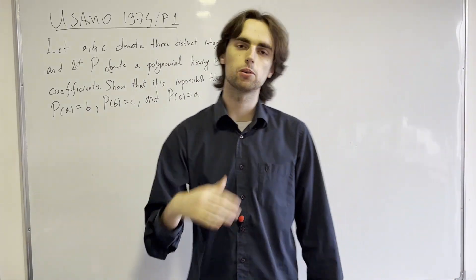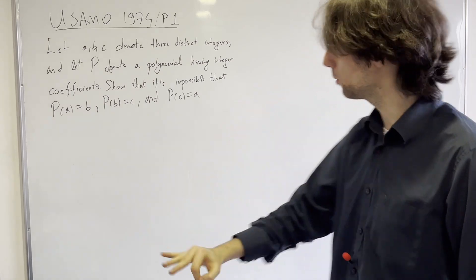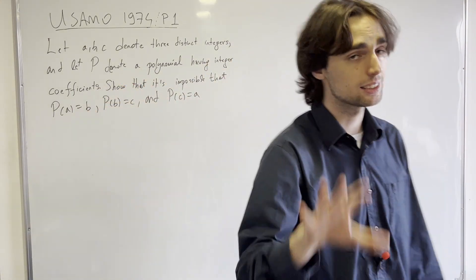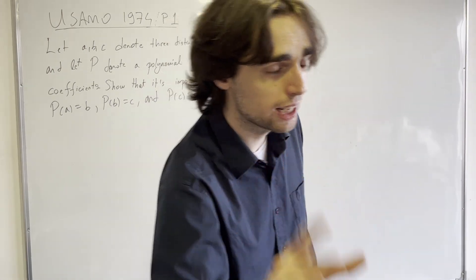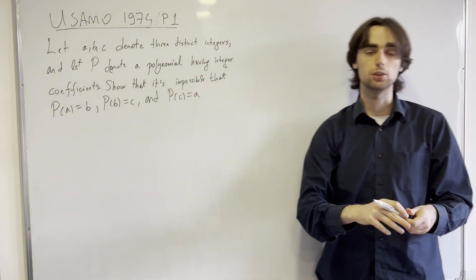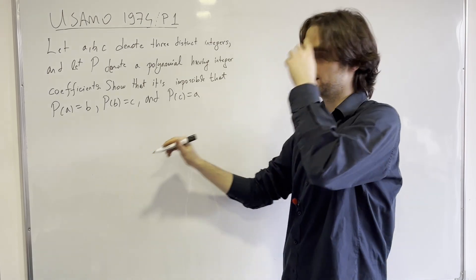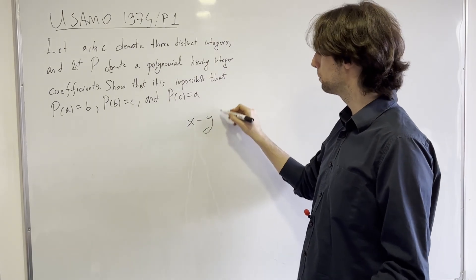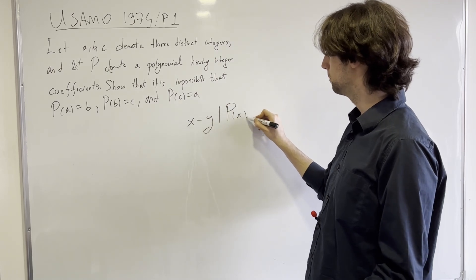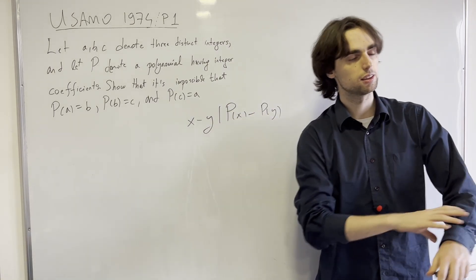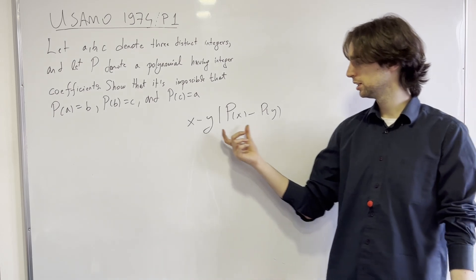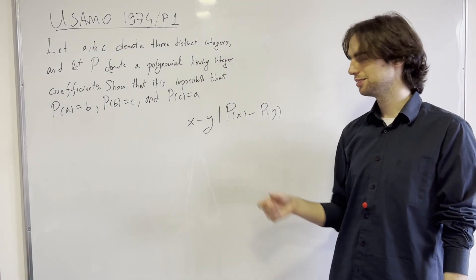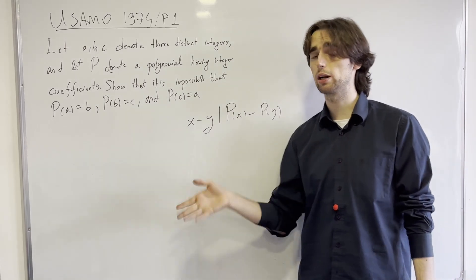We can look at the degree of the polynomial and everything, but let's remember what we're dealing with: a polynomial having integer coefficients. What do we use in that case? The answer is we use the identity that x minus y divides p(x) minus p(y), if x and y are different integers and a polynomial p has integer coefficients. This is used incredibly often.